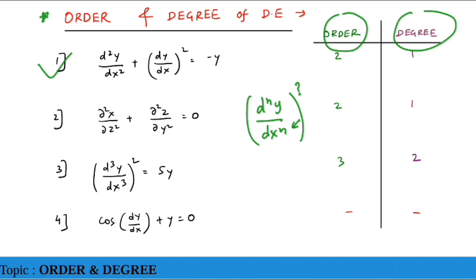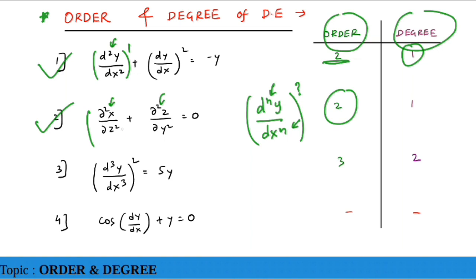For example: d²y/dx² + (dy/dx)² = −y. To find order, the maximum n is 2, so order = 2. The power of the highest-order term d²y/dx² is 1, so degree = 1. For ∂²x/∂z² + ∂²z/∂y² = 0, again n = 2 so order = 2, and power = 1 so degree = 1.